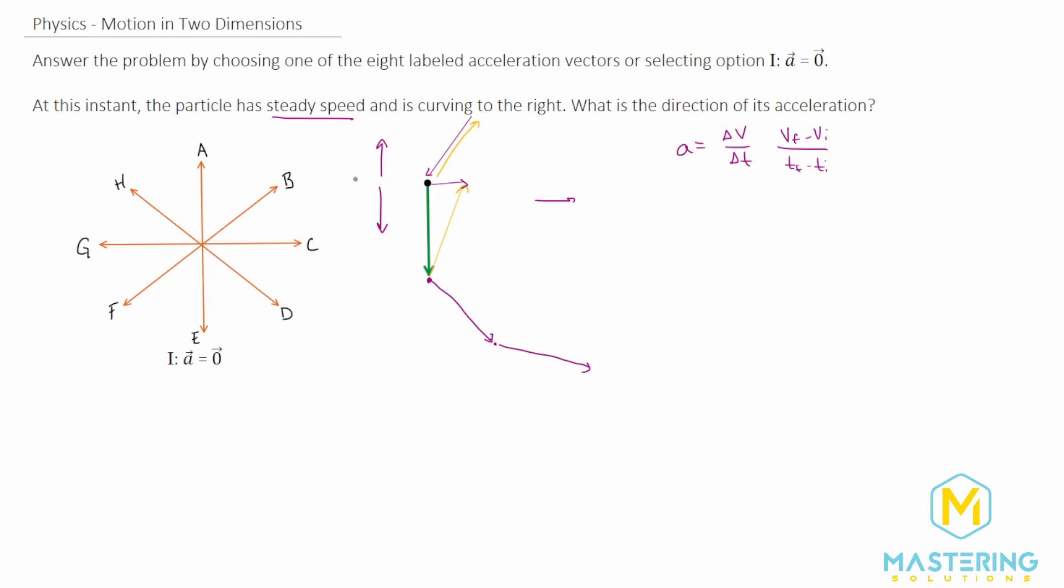So the motion is only either left or right. They say it's curving to the right, so it has to be C, meaning that the acceleration is only going to the right, causing the particle to go that direction.